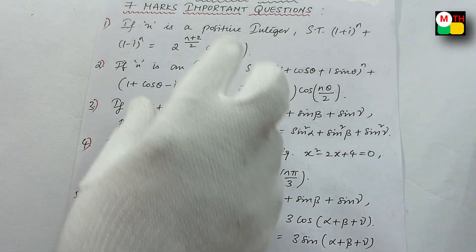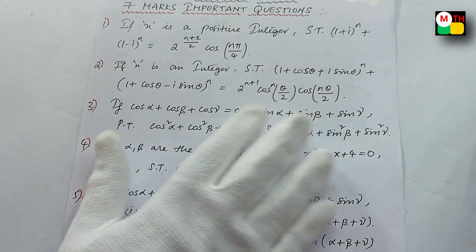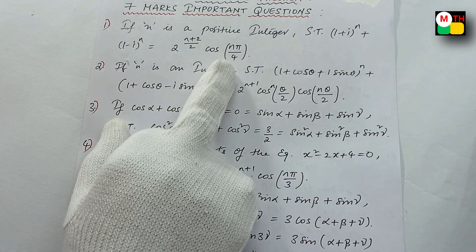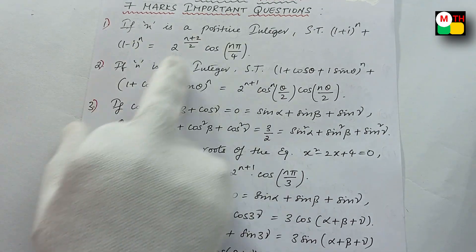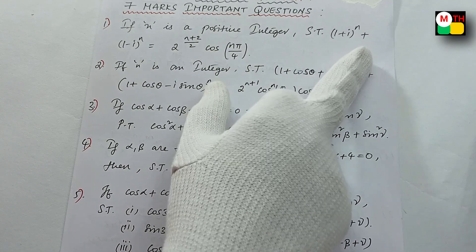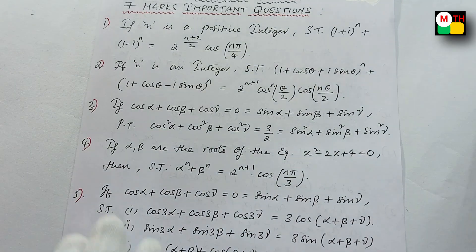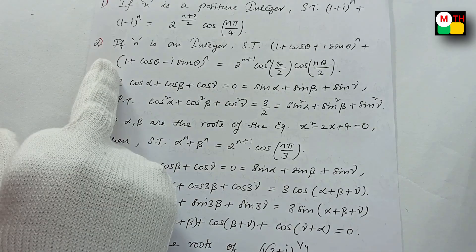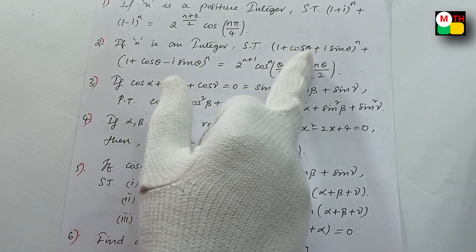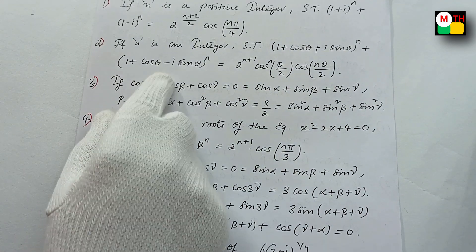You will see this picture by the end of the video. The important sum is: 1 plus i whole power n plus 1 minus i whole power n equals this result. You need to do this. And if n is a positive integer, show that 1 plus cos theta plus i sin theta whole power n plus 1 minus cos theta follows the same pattern.